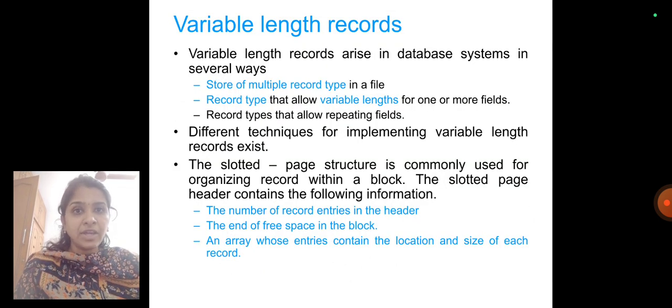Variable length records arise in database systems in several ways: store of multiple record type in a file; record type that allow variable lengths for one or more fields; record types that allow repeating fields. Different techniques for implementing variable length record exist.